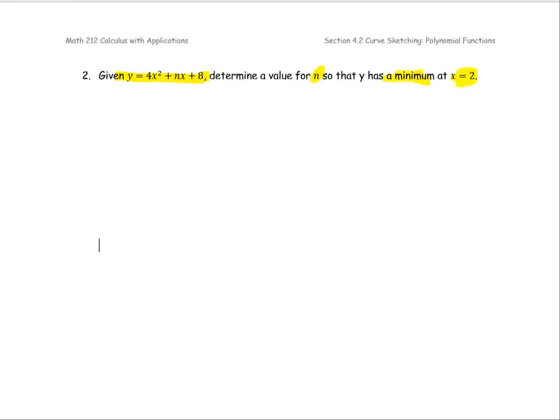For the function y equals 4x squared plus n times x plus 8, this is a polynomial degree 2. The graph is the parabola graph. It opens up.